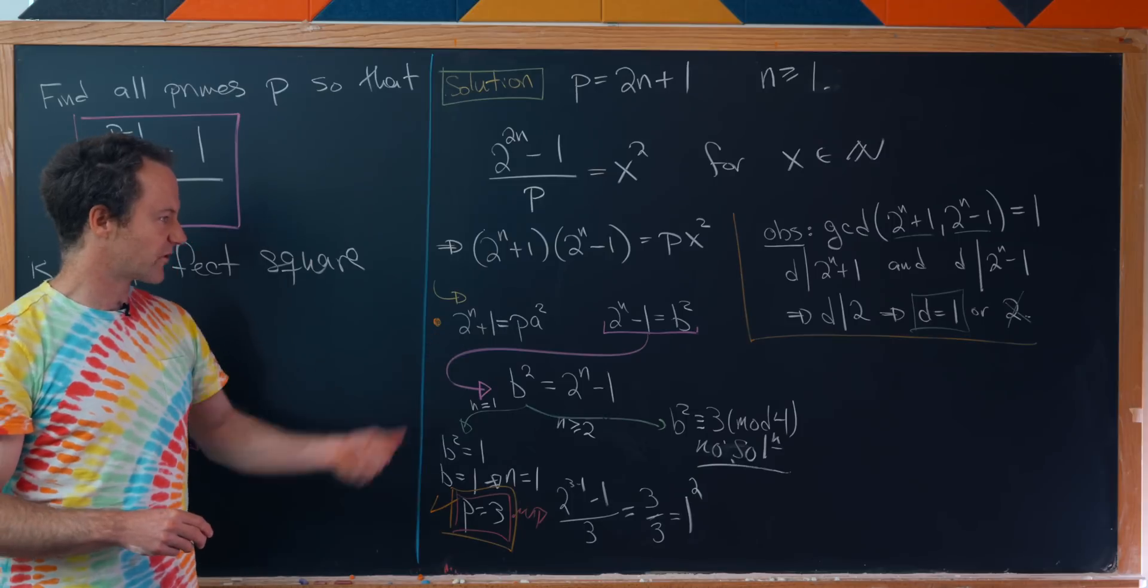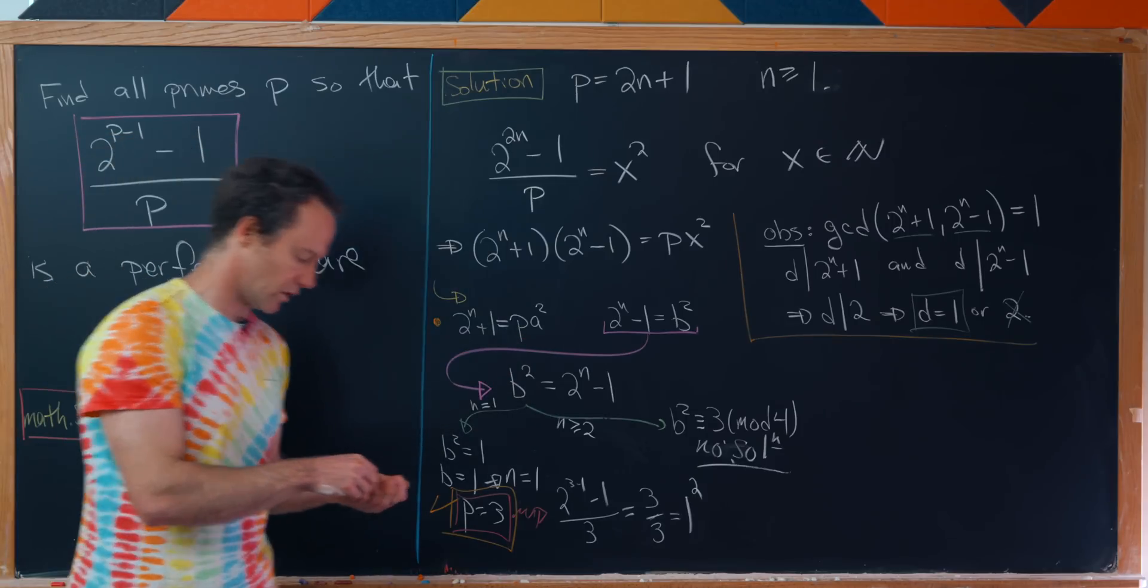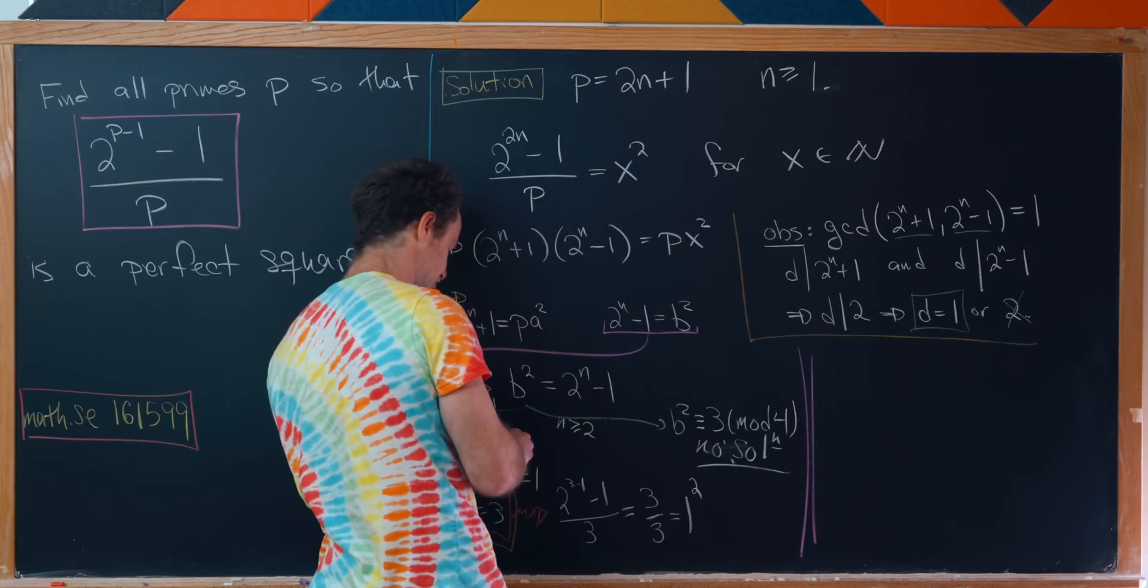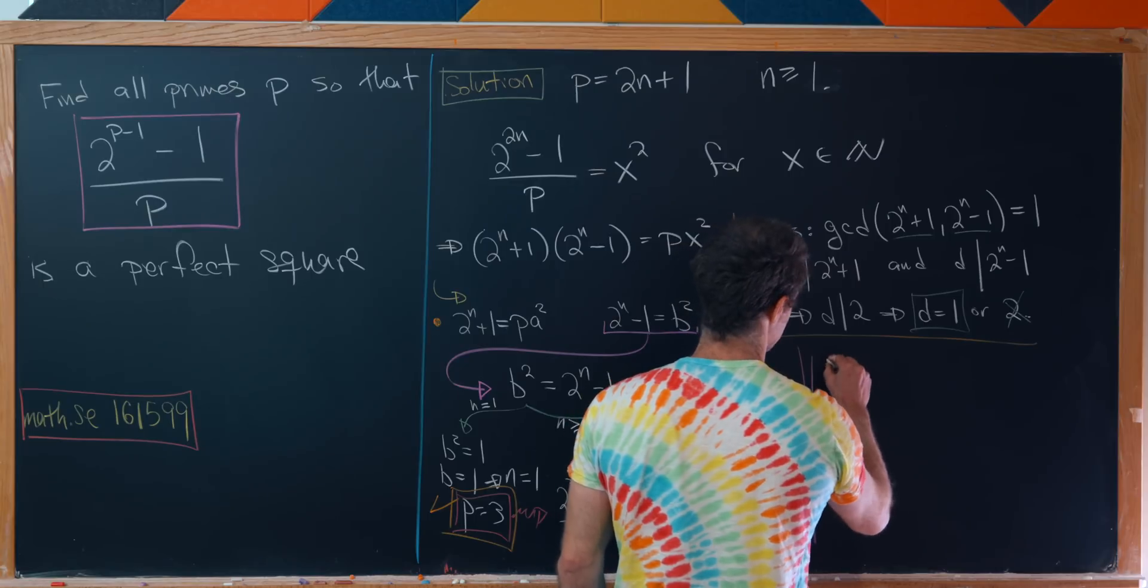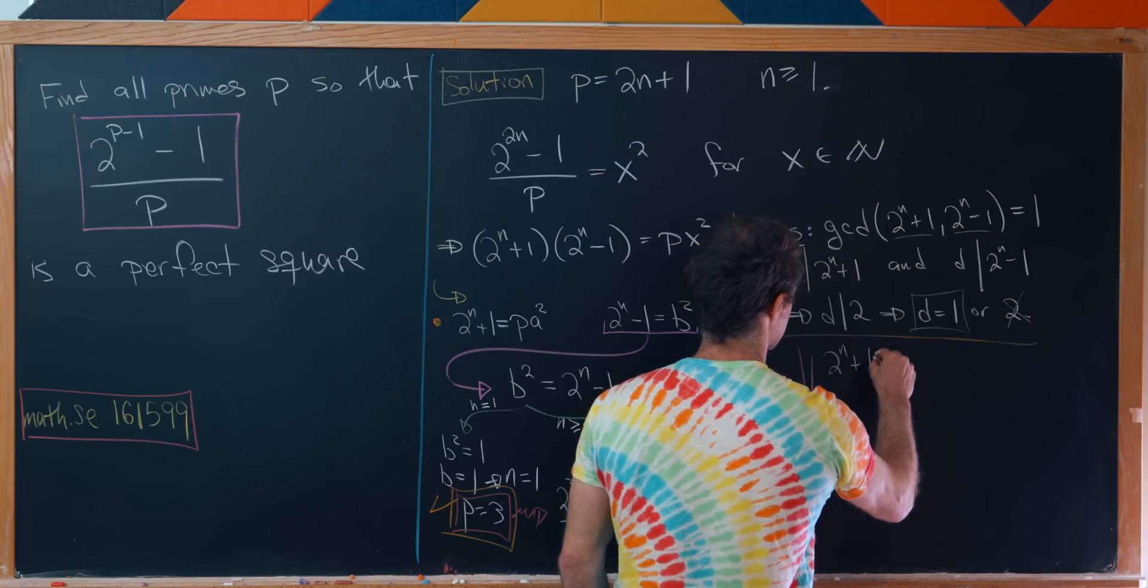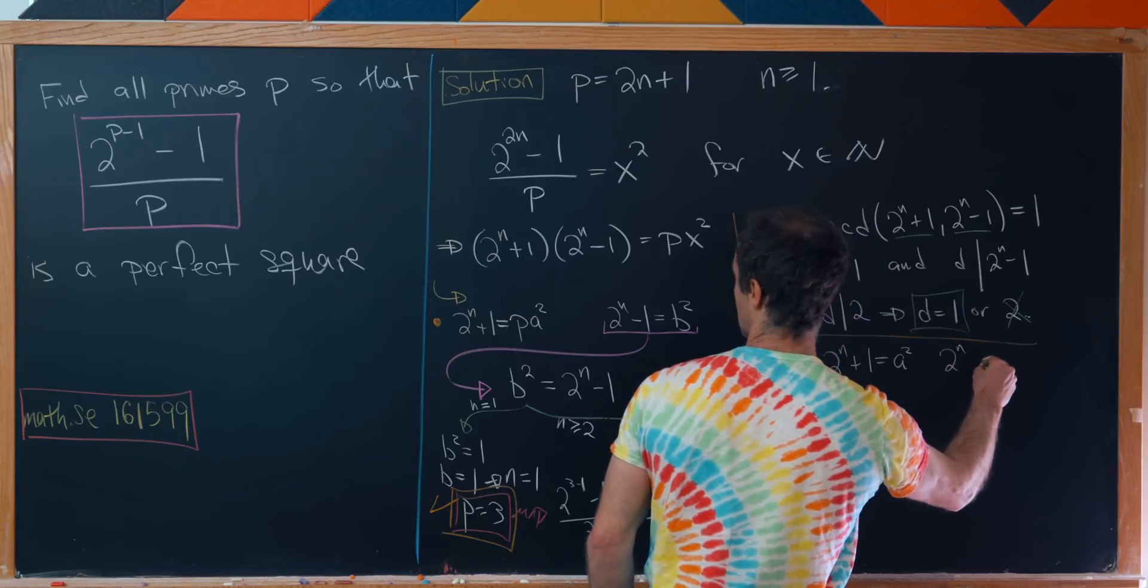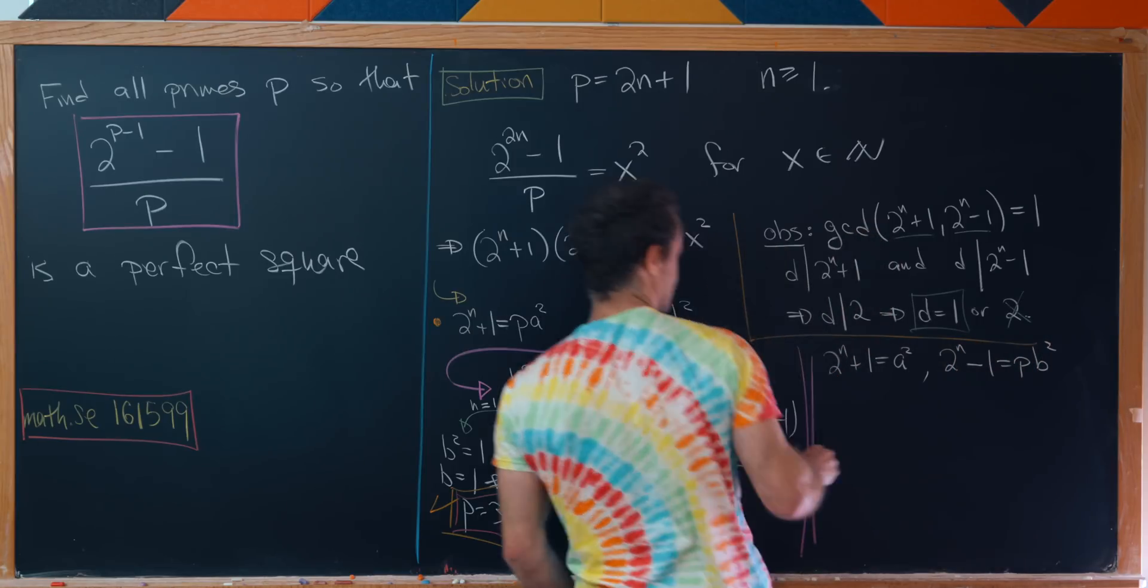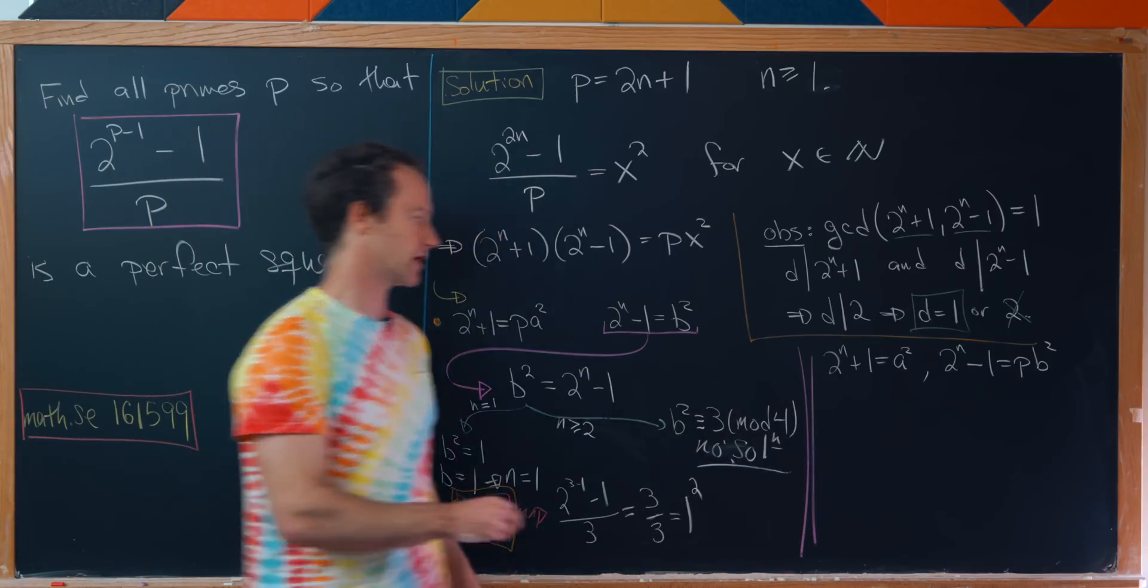That was our first case where we distributed the p to the 2^n + 1 term. Now let's look at the second case where we distribute the p to the other term. We'll have 2^n + 1 equals a^2 and 2^n - 1 equals p times b^2.